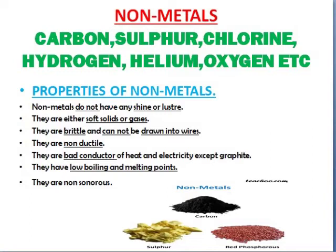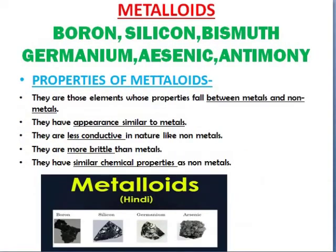Non-metals have low boiling and melting points — they can melt easily. They are non-sonorous, meaning they do not produce any kind of sound. So metals and non-metals are opposites of each other.